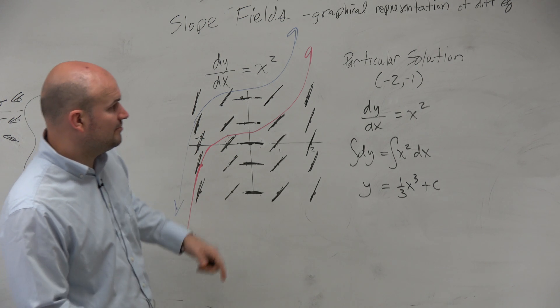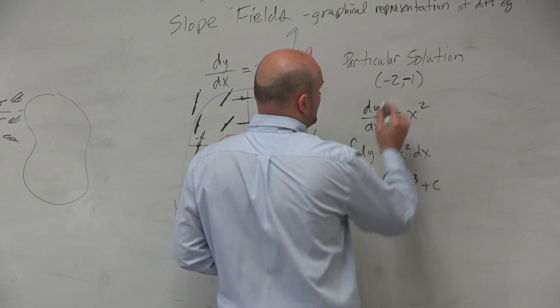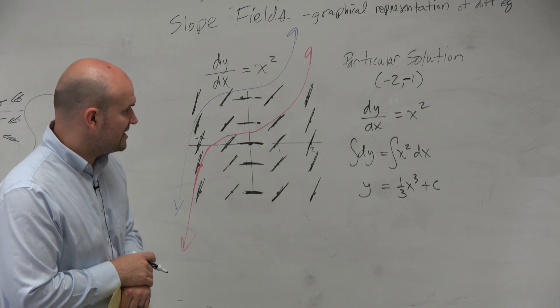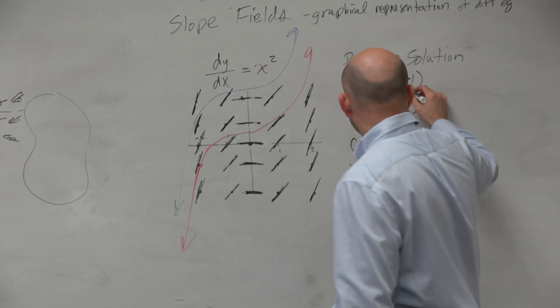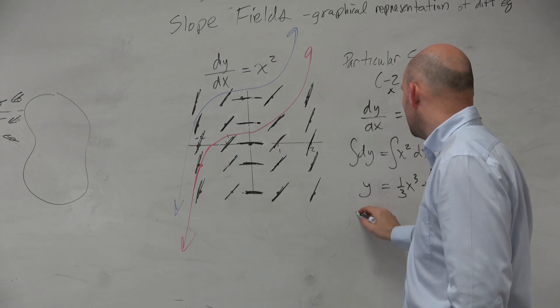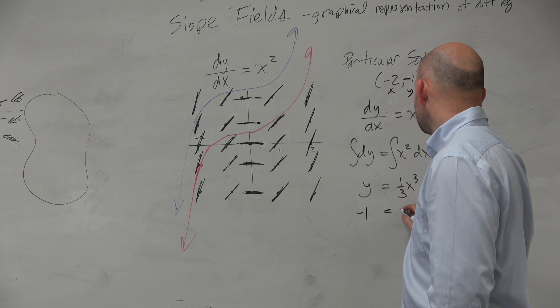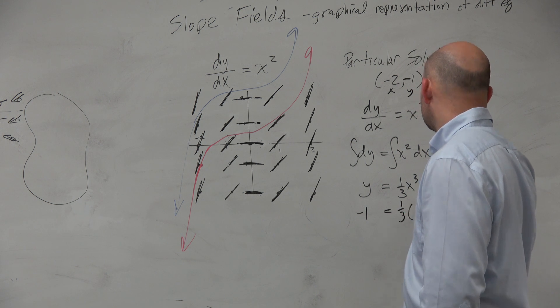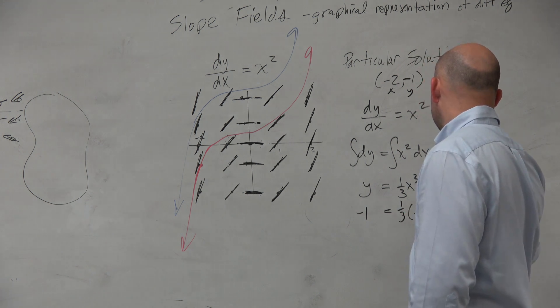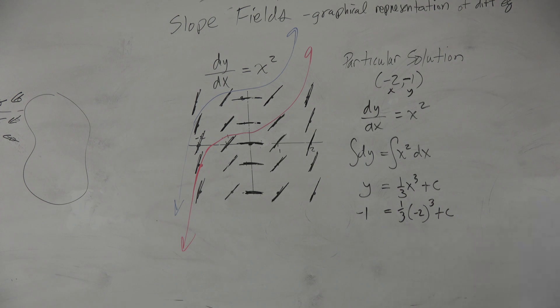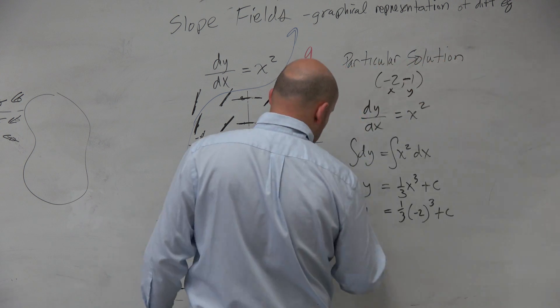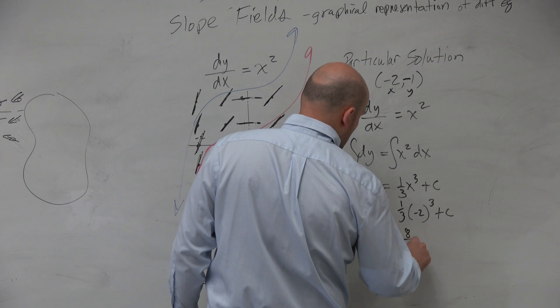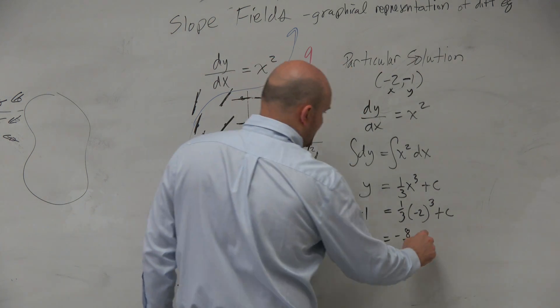But now we have a given point. Let's use negative 2, negative 1 to make sense of it. So therefore, that's my x and that's my y. So negative 1 equals 1 3rd times negative 2 cubed plus c. Negative 2 cubed is going to be a negative 8.